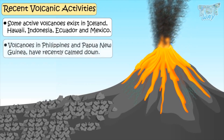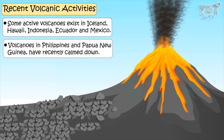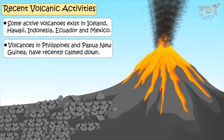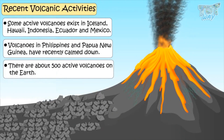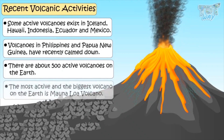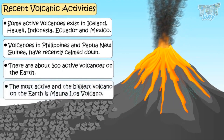Volcanoes in the Philippines and Papua New Guinea have recently calmed down. There are about 500 active volcanoes on the earth. The most active and biggest volcano on the earth is the Mauna Loa volcano.